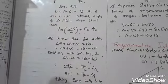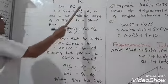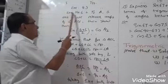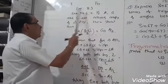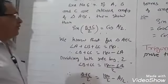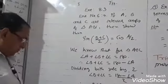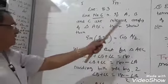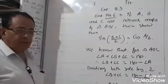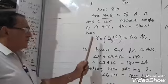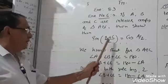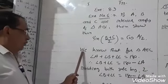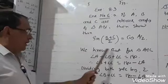Exercise number 8.3, example number 6. If A, B, and C are interior angles of triangle ABC, then show that sin((B+C)/2) is equal to cos(A/2).